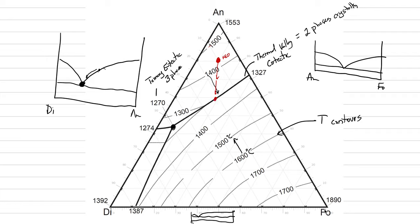We would start to crystallize forsterite at that point, and by doing that we would continue to cool, going down the thermal valley of the cotectic, until we reach the eutectic point where the remainder of the magma will crystallize until the last gasp of melt goes away. Then we would disappear down into the screen below the solidus as the rock continues to cool. That would be a descriptive path for how the composition changes.